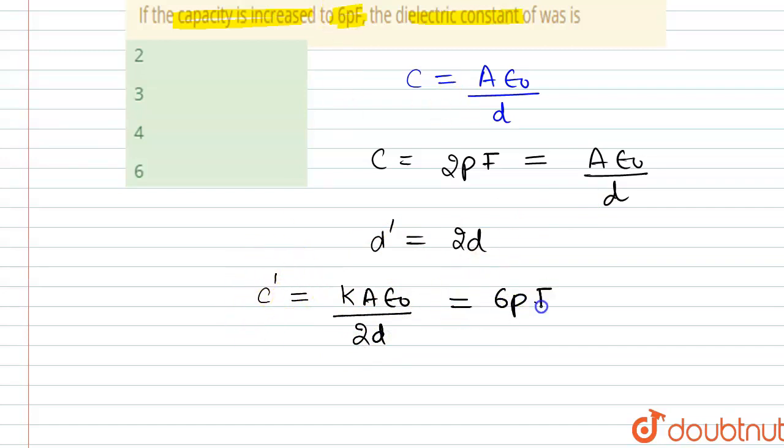We know that A ε₀ / d equals 2 picofarads. So we can write (k/2) × 2 pF = 6 pF.